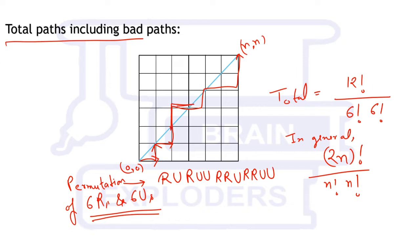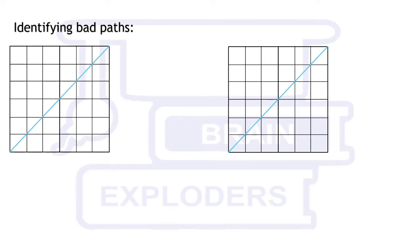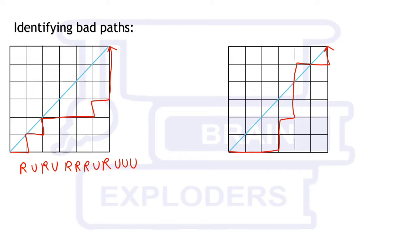Obviously, this is a bad path because we are going above the diagonal. Now, how can we identify that a path is bad if we write a permutation of R's and U's? Suppose here is a good path and here is a bad path. For a good path like R U R U R R R U R R U R U U U, if we take any prefix of this permutation from the start to somewhere in between, we will find that the number of R's is always greater than or equal to the number of U's.